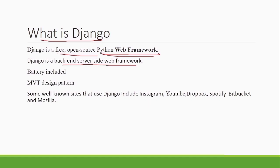Django is called 'batteries included' or sometimes a 'ready to go' system. Why? Because it provides a lot of features — administrative features, control through the admin panel, session management, authentication, authorization, and more. Because of all these features, it is called a ready-to-go or batteries-included system. This is also one of the important interview questions.